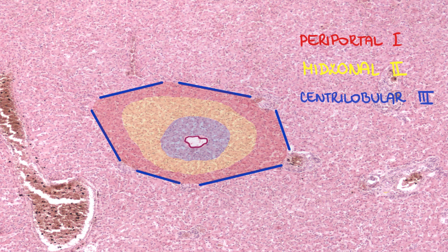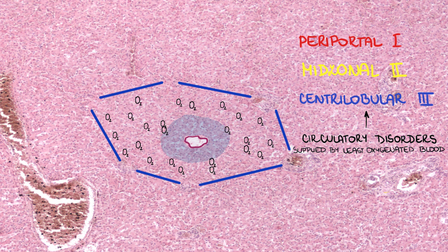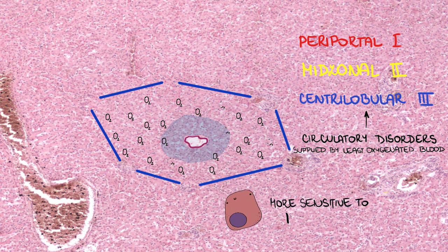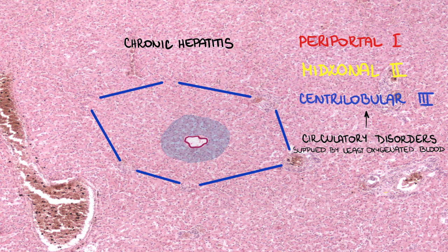For example, circulatory disorders tend to manifest predominantly in the centrilobular zone, since this region is supplied by the least oxygenated blood and its hepatocytes are more sensitive to hypoxia. On the other hand, chronic hepatitis manifests preferentially in the portal and periportal space.